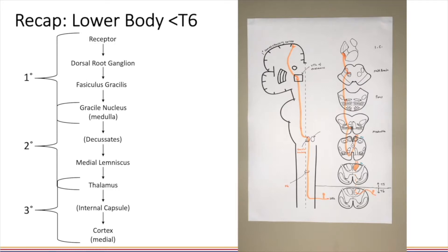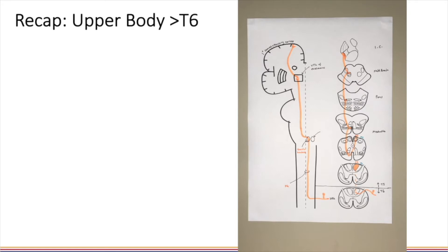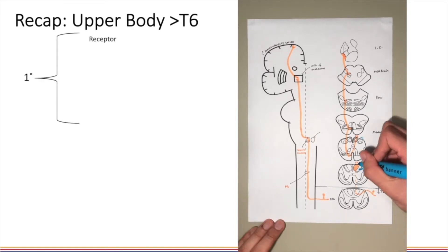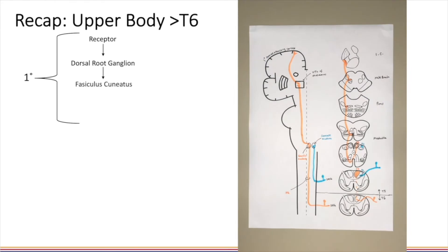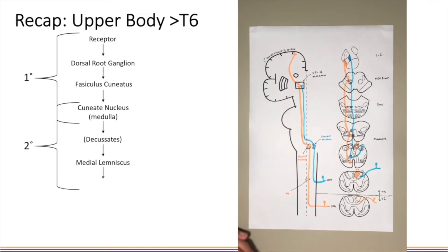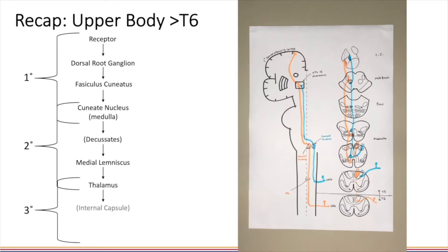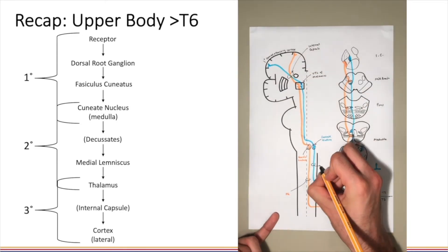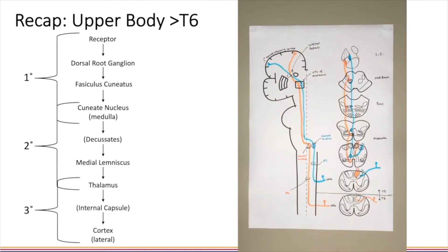For the upper body above T6, the first order neuron runs from the receptor to the dorsal root ganglion before ascending in the fasciculus cuneatus to the cuneate nucleus in the medulla. The second order neuron runs from the cuneate nucleus, decussates, and then ascends in the contralateral medial lemniscus to the thalamus. The third order neuron runs from the thalamus to the lateral part of the cortex via the internal capsule.